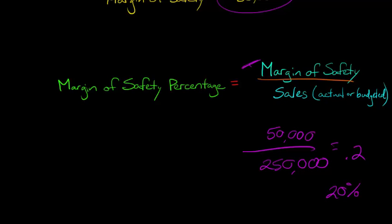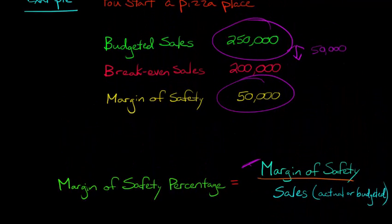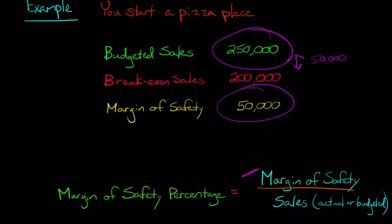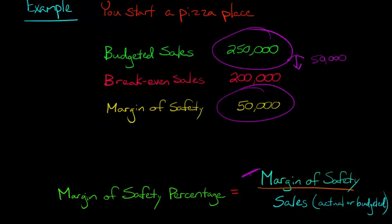How do we interpret this? This basically means that our forecasted sales of $250,000 can fall 20% before we would actually start losing any money.